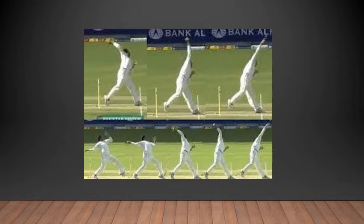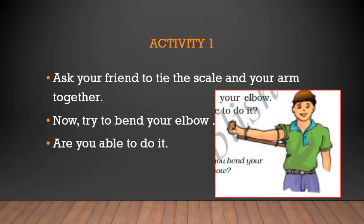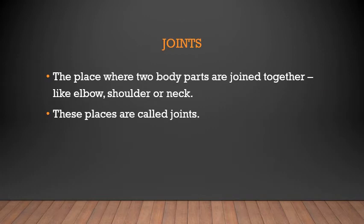Why are we able to move some parts of our body easily in various directions, and some only in one direction, while some parts we cannot move at all? There is a small activity: place a long scale lengthwise on your arm so your elbow is at the center, and ask a friend to tie the scale to your arm. Now try to bend your elbow — you cannot, right? We are able to bend or rotate our body at places where two parts seem to be joined together, like the elbow, shoulder, or neck. These places are called joints.